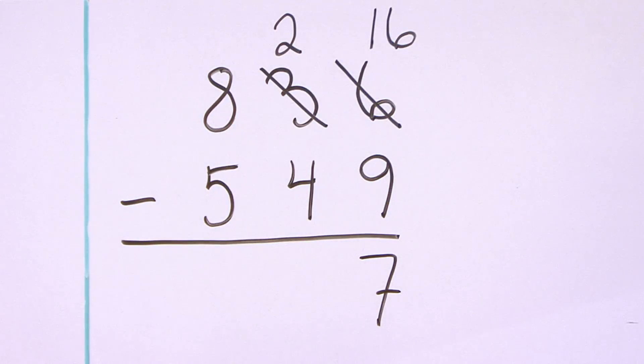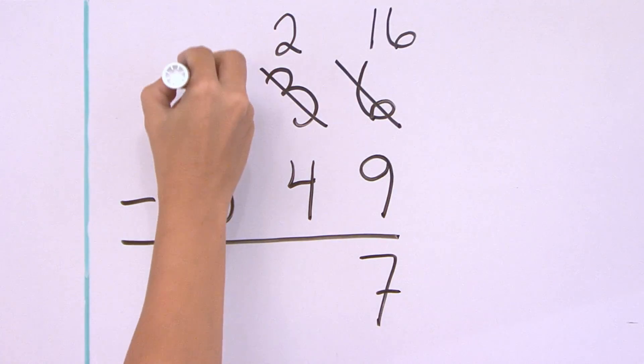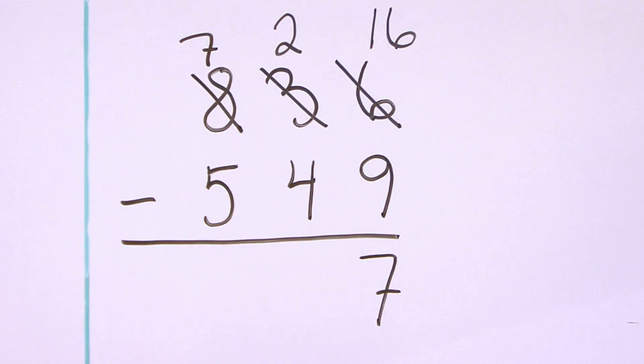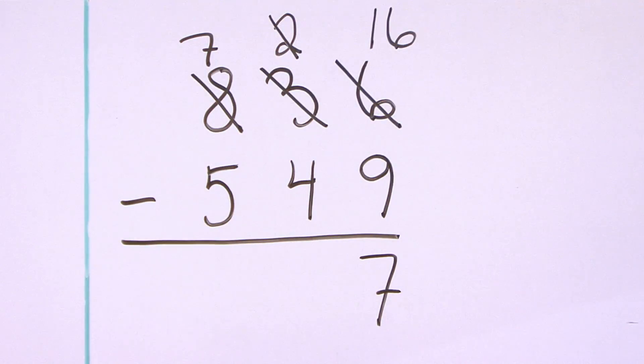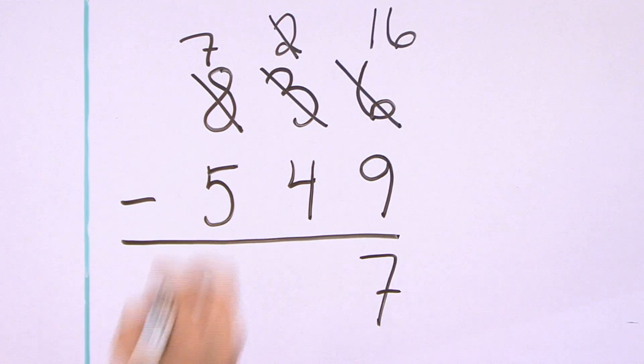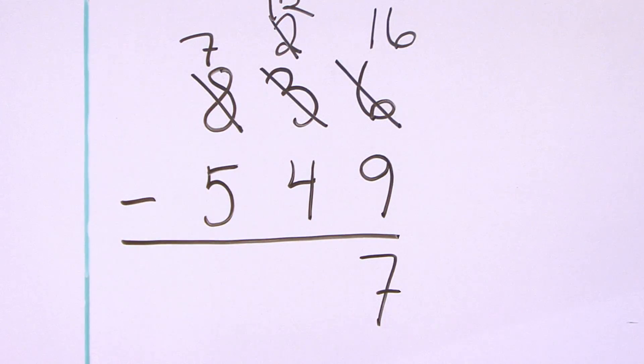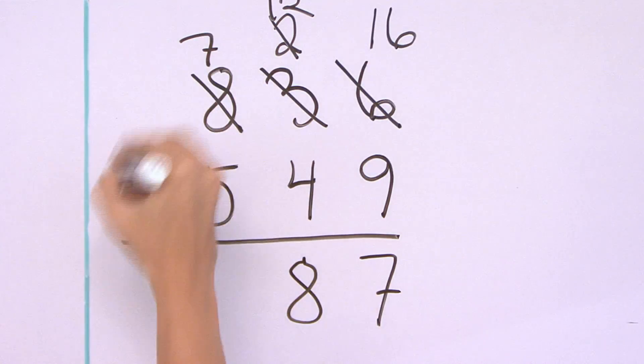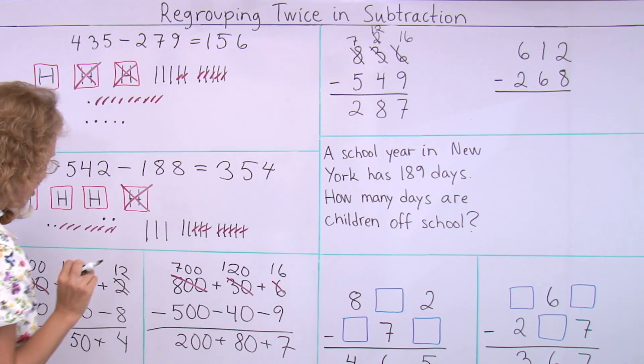In the tens, two minus four, I cannot do that. I take one of the hundreds, leaving seven hundred here. And now over here, there's going to be ten new tens and two tens, so it's basically twelve tens. I could have written it twelve there. And now I have twelve minus four, eight, and then seven minus five, two.